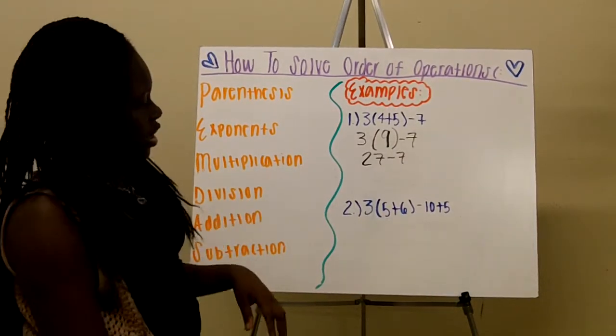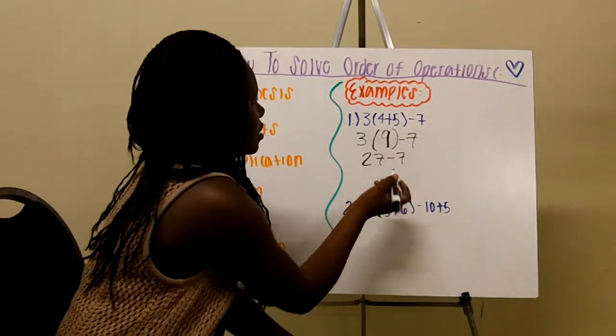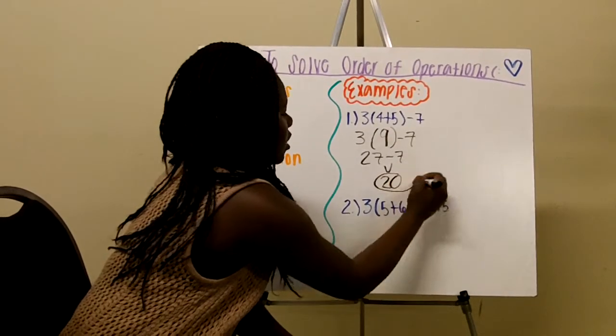And then we have addition and subtraction. So I would work from left to right, and then 27 minus 7 is 20. So that would be your answer.